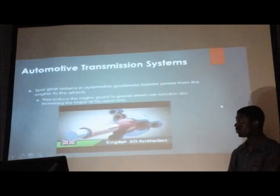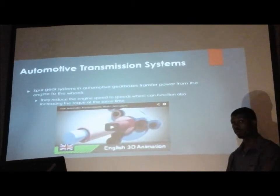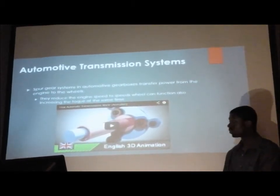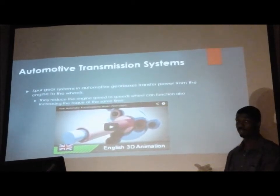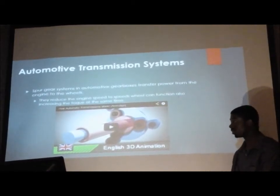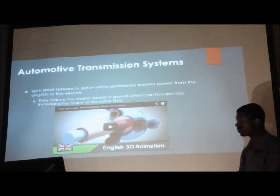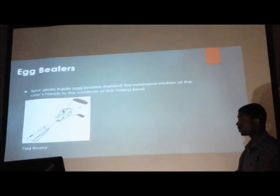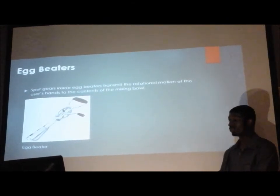In automotive transmissions, we use a spur gear system to transmit power or rotational speed from the engine to the wheels. We need to decrease this power from the engine because the engine operates at speeds faster than the wheels can function at. And in egg beaters, this allows the chef to stir the contents of the mixing bowl.